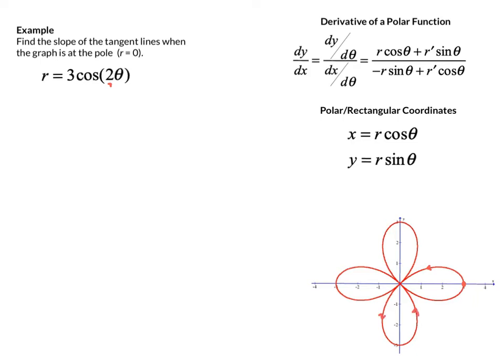What we want to do here is determine, as the graph makes one full sketch of the rose, what are the tangent line slopes going to be when it's at the pole. When we say at the pole, the pole for a polar function is when the radius is 0, which means in rectangular coordinates it's the origin. So we're looking for what the tangent line slope is every time this graph crosses the pole, which happens quite a few times as you follow the trace of the graph.